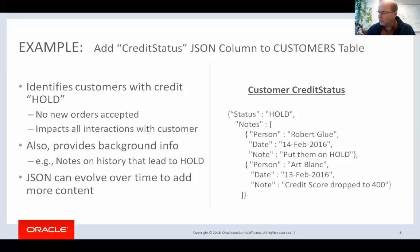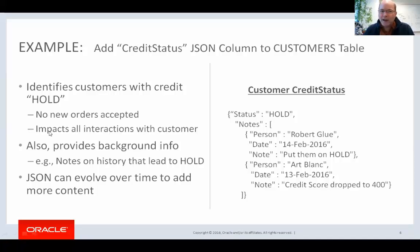I'm going to give an example of this: we're going to add a credit status JSON column to a customer table. The key thing about this data is that it identifies whether a customer's credit is on hold or not. This is important because it impacts everything — no new orders can be accepted if there's a credit hold, and it impacts all interactions with the customer. This is probably a good case for 'belongs to' data, since every time you pull up a customer record you should probably get this credit status information. You may want to start with just having whether the credit status is on hold or not, but over time you might want to add more data — for example, a JSON array that records the notes on the history that led up to the hold.